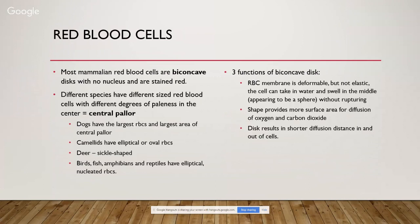Most mammalian red blood cells are biconcave discs with no nucleus and are stained red. Different species have different sized red blood cells with differing degrees of central pallor — some look like donuts. Dogs have the largest red blood cells with the largest area of central pallor. Camelids have elliptical or oval red blood cells. Deer red blood cells are sickle-shaped, which is normal for them — in humans, sickle-shaped red blood cells indicate sickle cell anemia. Birds, fish, amphibians, and reptiles have elliptical and nucleated red blood cells called heterophils.